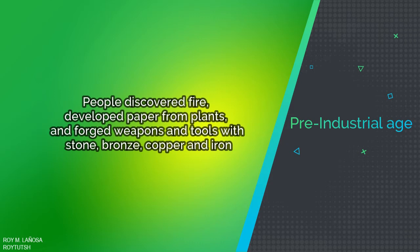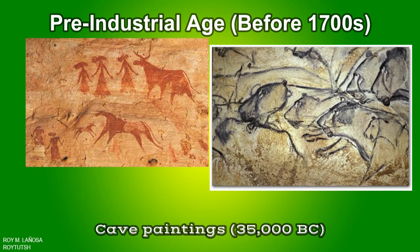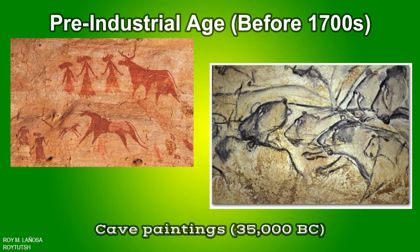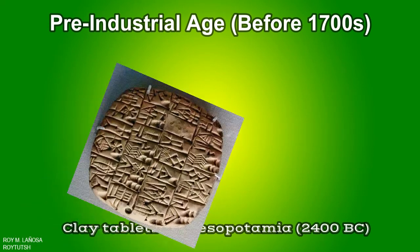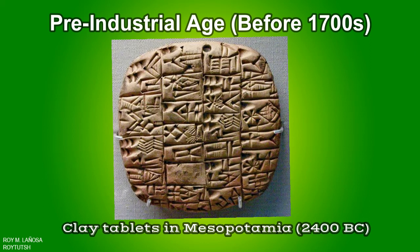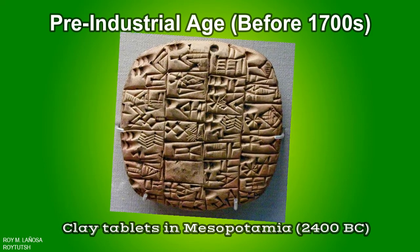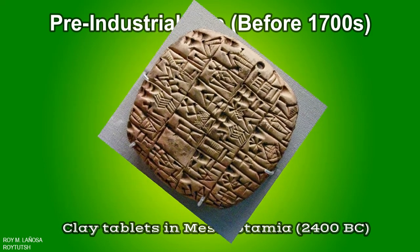We have different examples from the Pre-Industrial Age. First, cave paintings — a type of parietal art found on the walls or ceilings of caves. Clay tablets were used as a writing medium, especially for writing in cuneiform throughout the Bronze Age and well into the Iron Age. Cuneiform characters were imprinted on a wet clay tablet with a stylus, often made of reed.